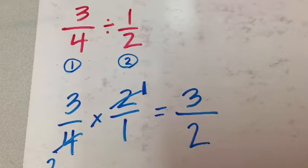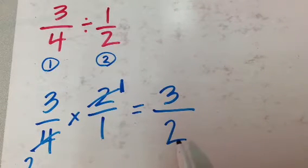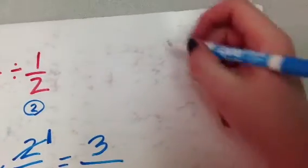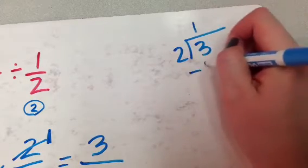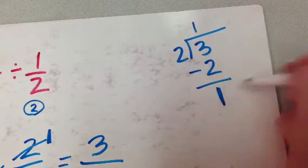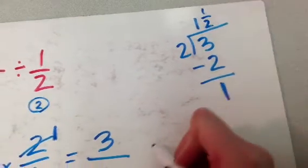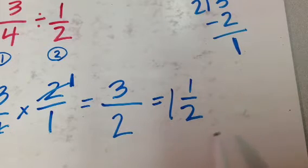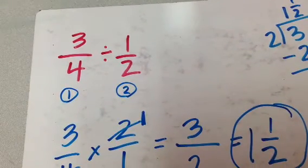So I could say that 3 fourths divided by 1 half equals 3 over 2. Now I have to ask myself my two questions. Is this a proper fraction? Well, no — my top number is larger than my bottom number. So I'm going to do a little math: I've got to divide my bottom number into my top number. 2 can go into 3 one time; 1 times 2 is 2, and when I subtract I have 1 left over. So this is going to be 1 and a half. Is it reduced down as far as it can go? Yes. So 3 fourths divided by 1 half equals 1 and 1 half.